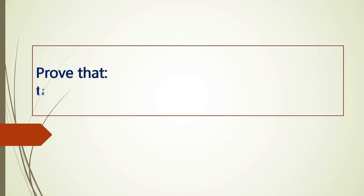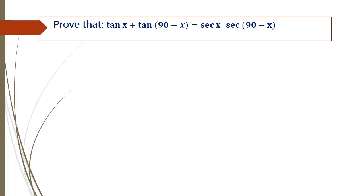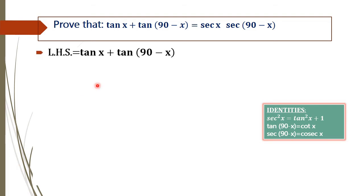Trigonometry. Prove that tan x plus tan of 90 minus x equals sec x into sec of 90 minus x. So we have to prove tan x plus tan of 90 minus x equal to sec x into sec of 90 minus x. In order to prove this equation, first consider the LHS of the equation, that is tan x plus tan of 90 minus x.